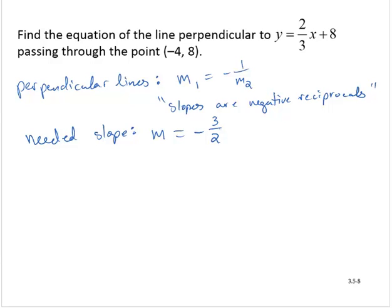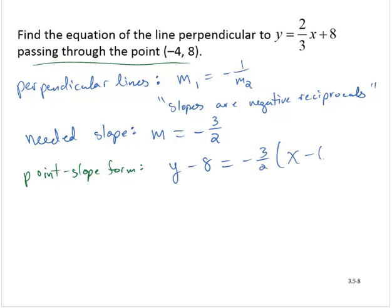It's passing through the point negative 4, 8. So what I'm going to do is use the point-slope form to write y minus 8 equals negative 3/2 times x minus negative 4. Now, we don't usually write minus negatives, we don't like that. So I'm going to get rid of that minus negative 4, and I'm going to write plus 4. And so there's the point-slope form.